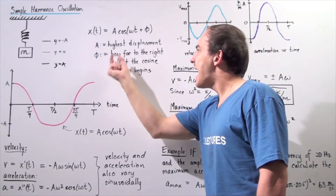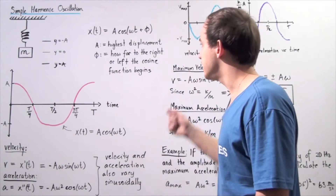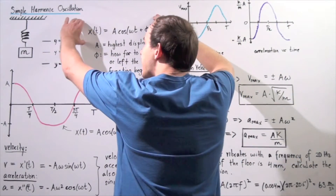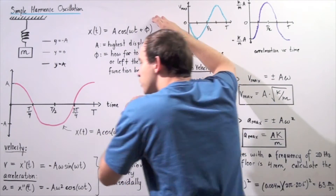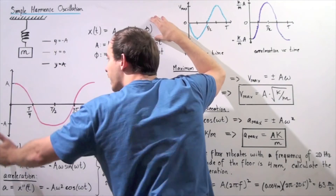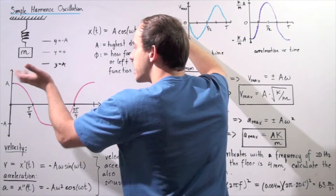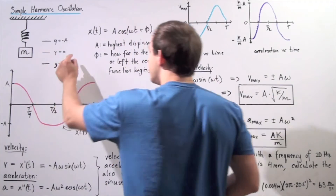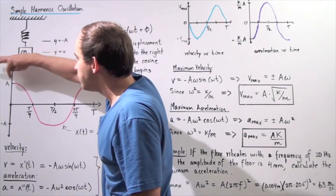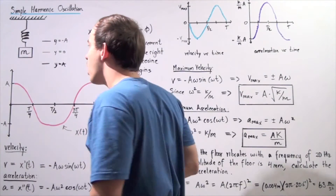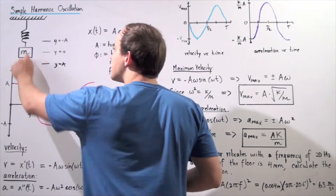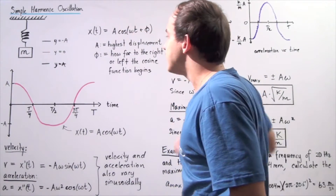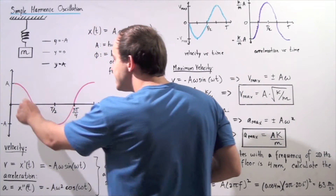The phase angle φ tells us how far to the right or left of the origin the cosine function begins. Let's graph this equation on the xy-plane, where the x-axis is time and the y-axis is displacement. Initially, the object begins at the maximum displacement — the amplitude. When we graph the cosine function beginning at point A, we get the resulting displacement-versus-time curve.